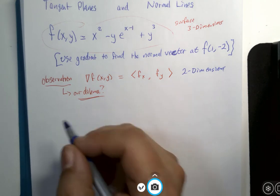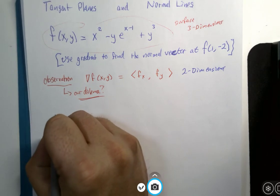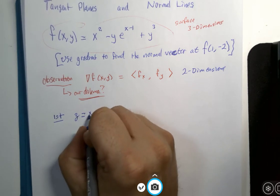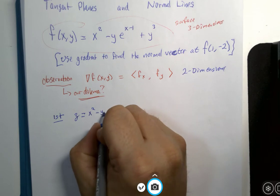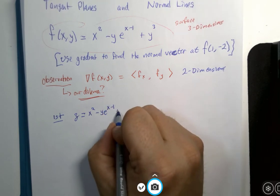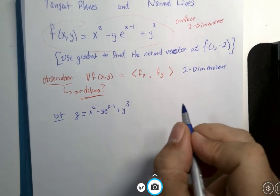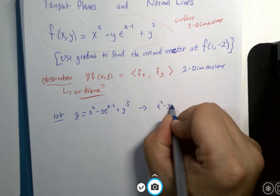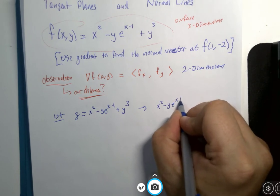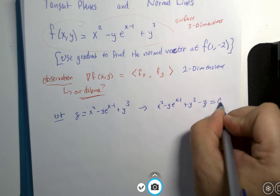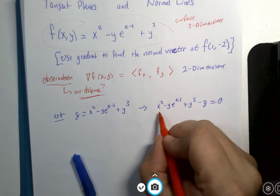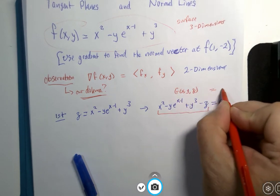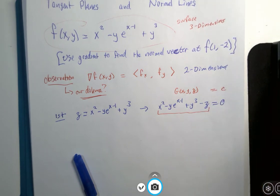Let's do this here. If I go back to my original problem, z equals x squared minus y e to the x minus 1 plus y cubed, I could transform this to x squared minus y e to the x minus 1 plus y cubed minus z equals 0. This would be my three variable function equal to a constant that we were working with before.